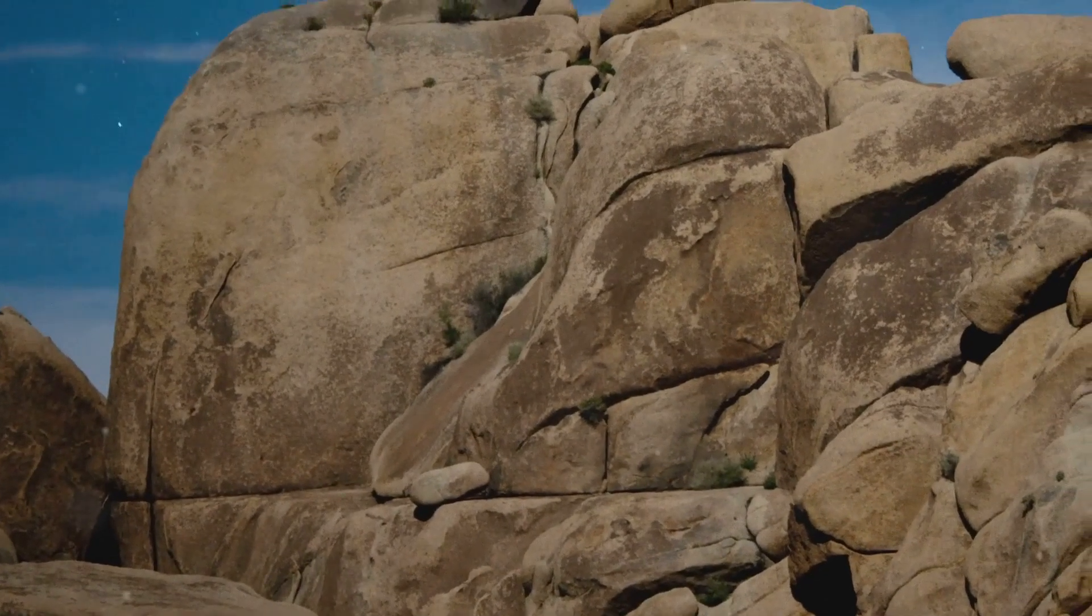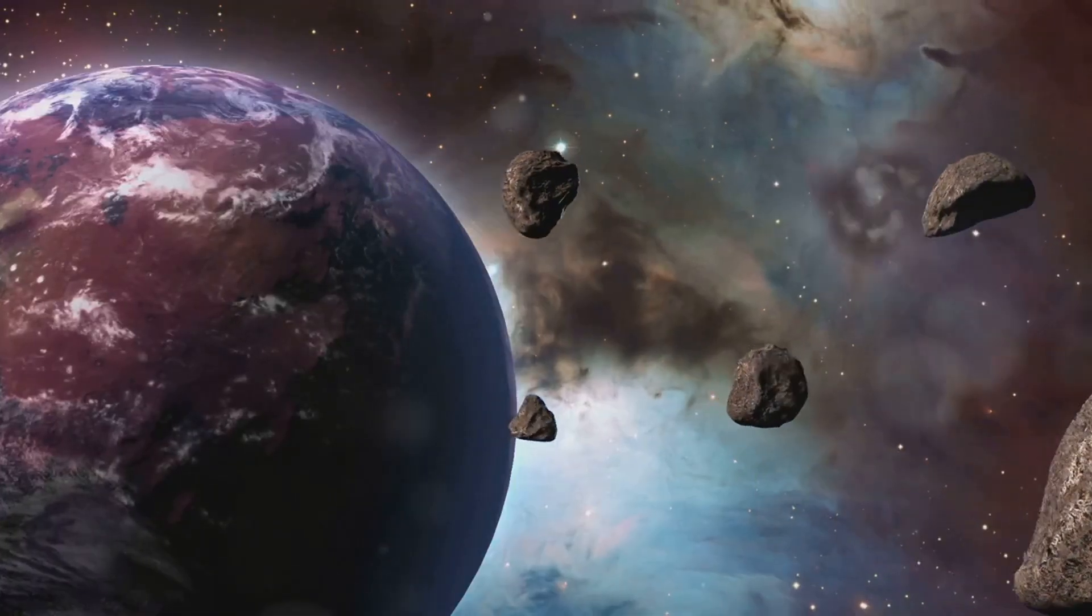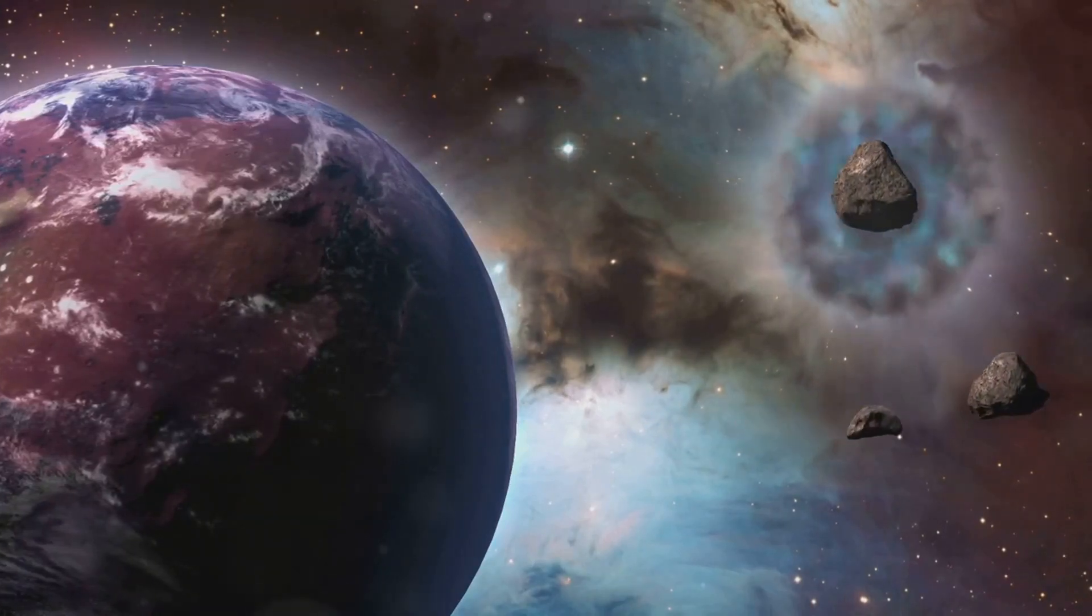These tiny particles gradually grew larger, forming pebbles, then boulders, and eventually, planetesimals, small, rocky bodies that were the building blocks of planets.